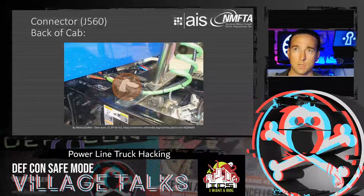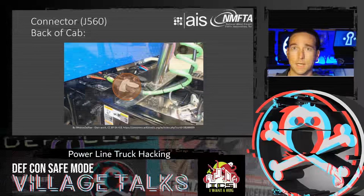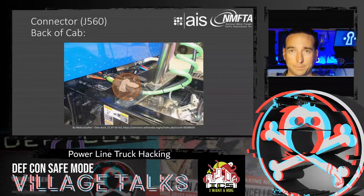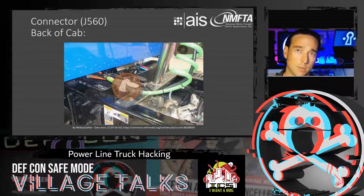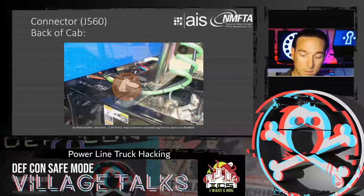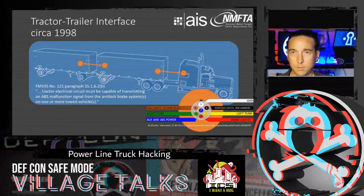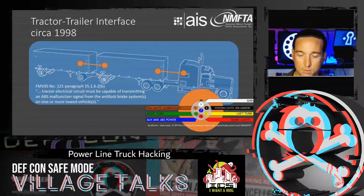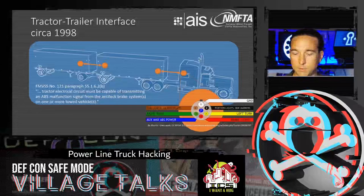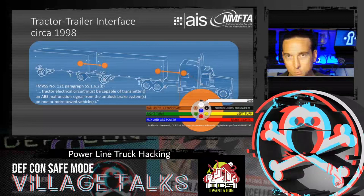Trailers and tractors are connected with the J560 connector — a seven-way connector. You can see the green pigtailed cable plugging into a bulkhead jack, with red and blue pressurized air cables behind it. The J560 has tail lights, right turn, left turn, brake lights, a ground connector, and power for ABS and auxiliary. It's a fully populated connector with no room for anything else.